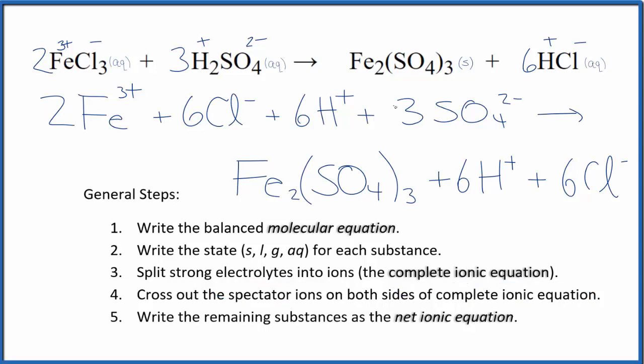On the top, I have reactants. Products on the bottom. I see six chloride ions here in the reactants and in the products. Let's cross those out. They're spectator ions. Six hydrogen ions, again in the products. Cross them out. Spectator ions. What's left?